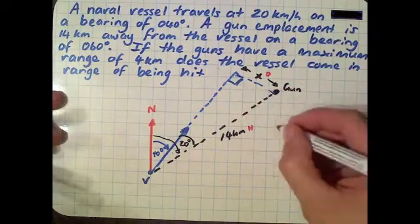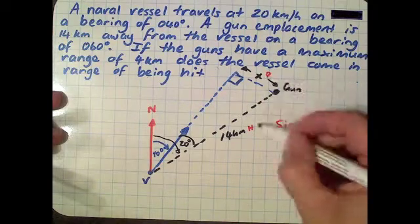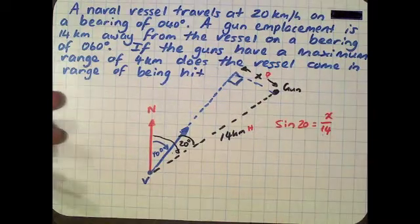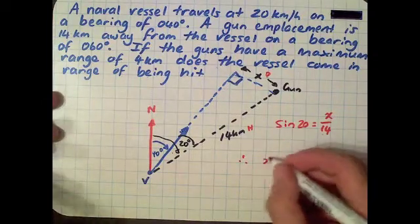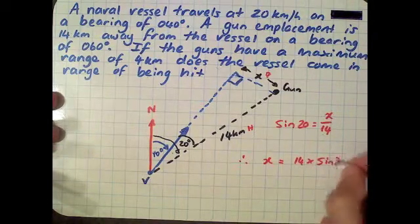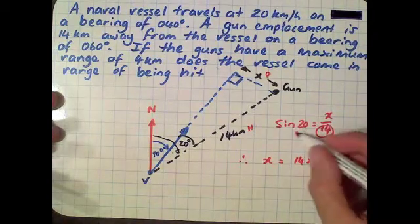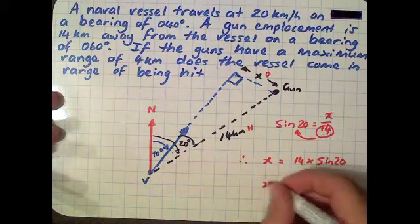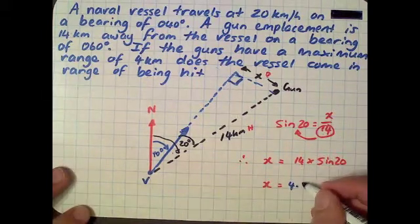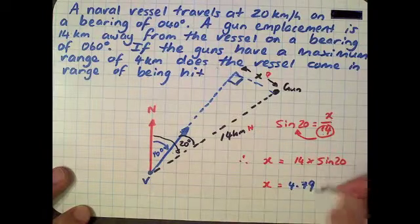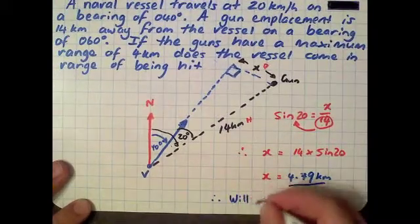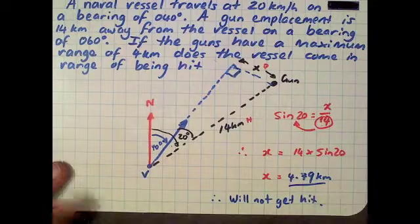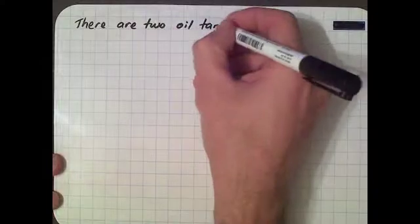Let's call that the opposite side, and that's the hypotenuse. We're going to use sine: sine 20 degrees equals x over 14. Rearranging to make x the subject, we get x equals 14 times sine 20. Calculated, we get x equals 4.79 kilometers. That means the boat's not going to get hit. We've got to put that answer down, otherwise we've just calculated something without answering it. The vessel will not get hit.